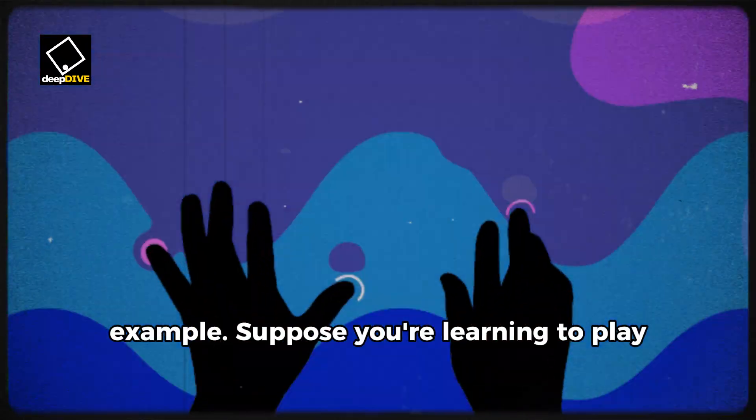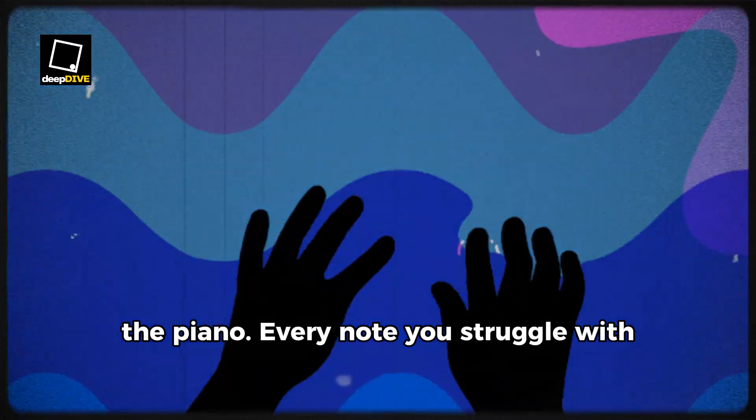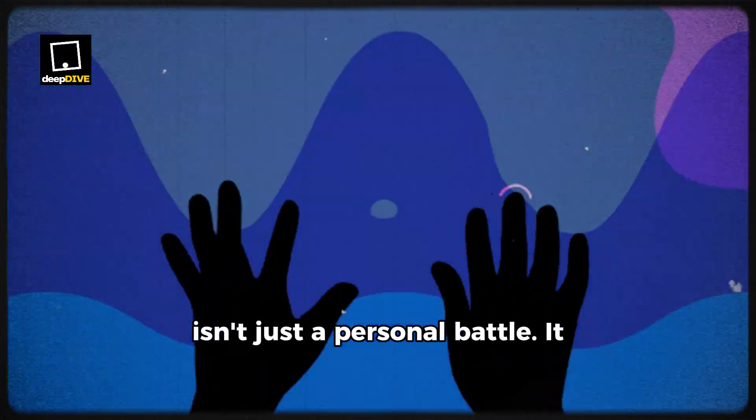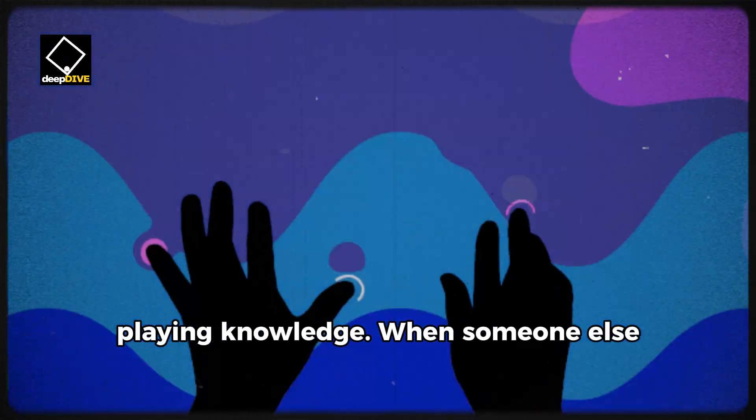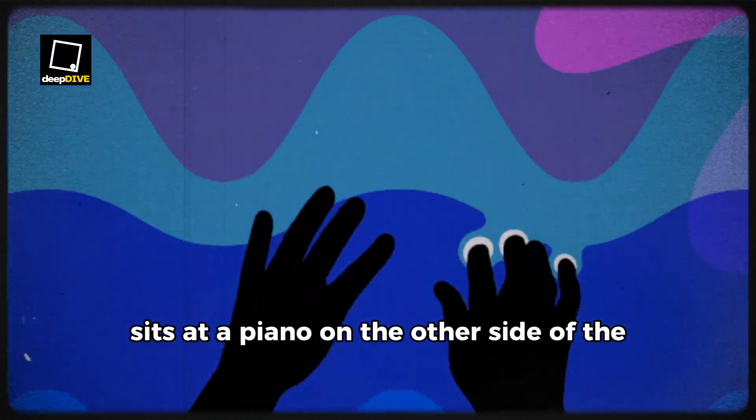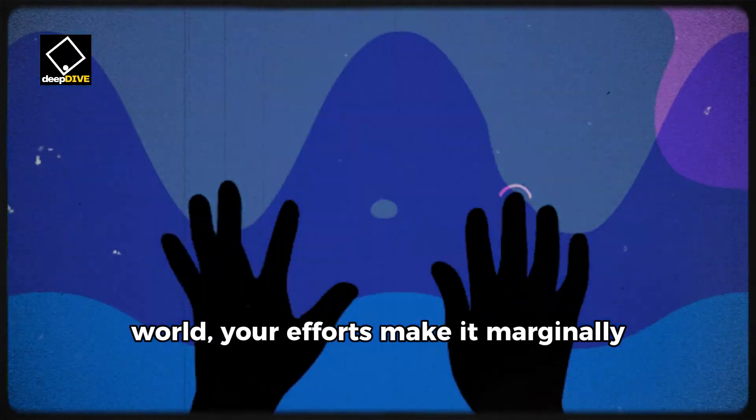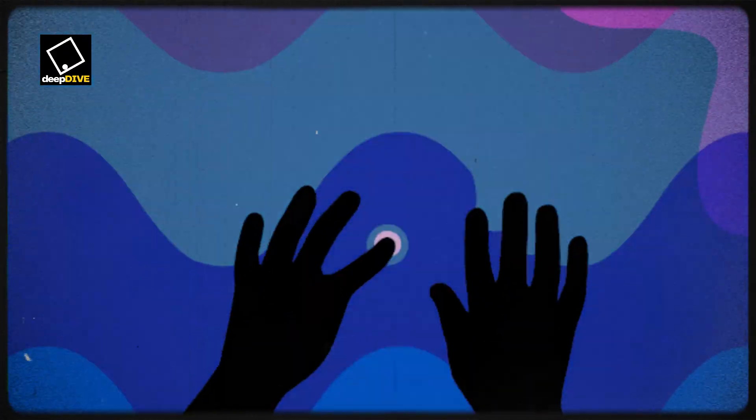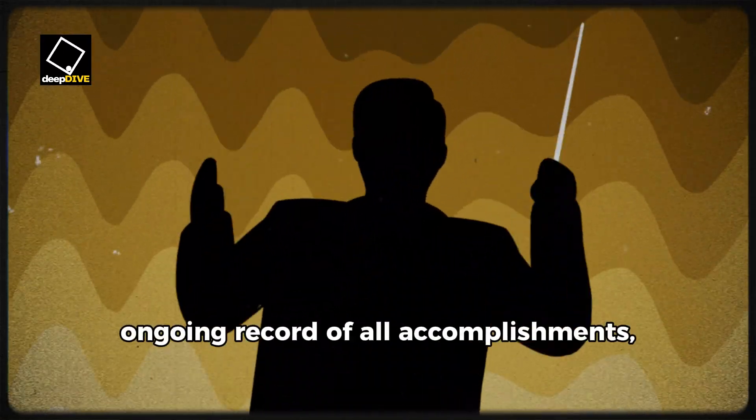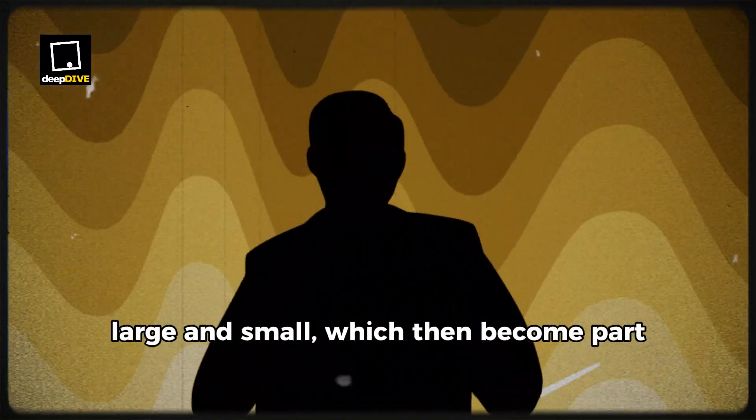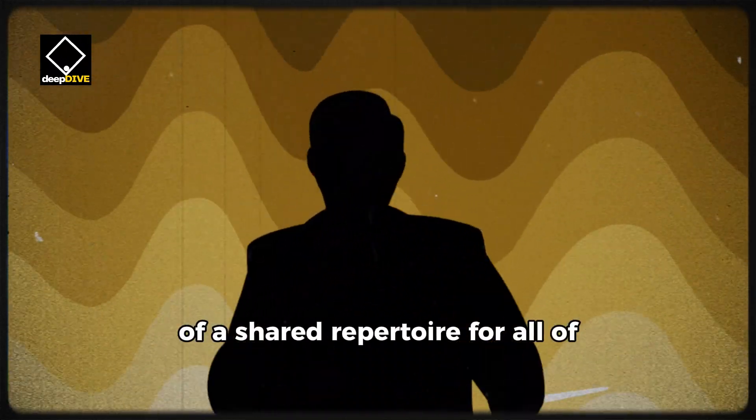Let's break this down with an example. Suppose you're learning to play the piano. Every note you struggle with isn't just a personal battle. It contributes to a morphic field of piano-playing knowledge. When someone else sits at a piano on the other side of the world, your efforts make it marginally easier for them to master the same skill.